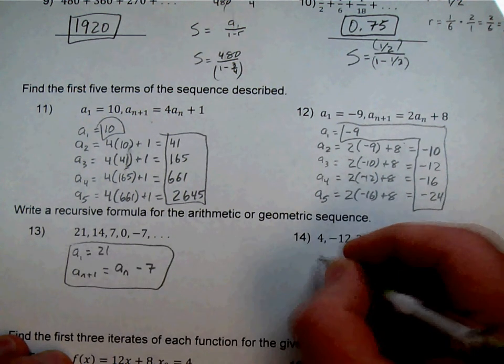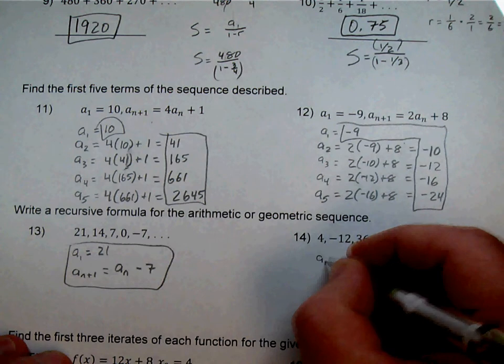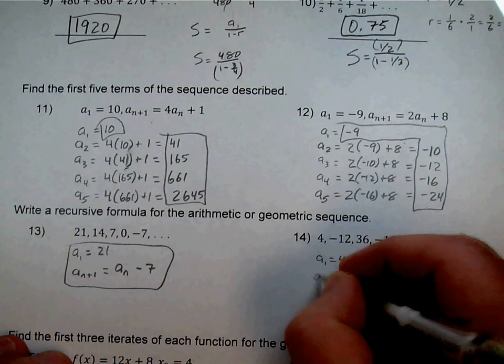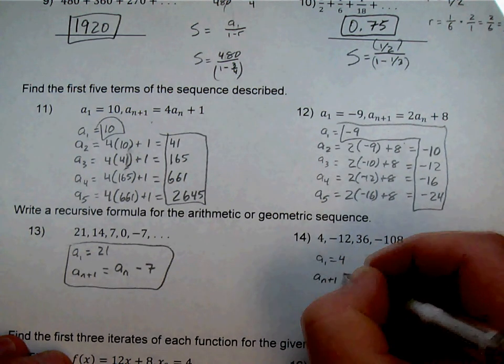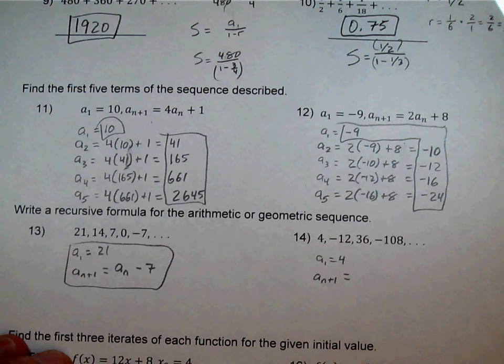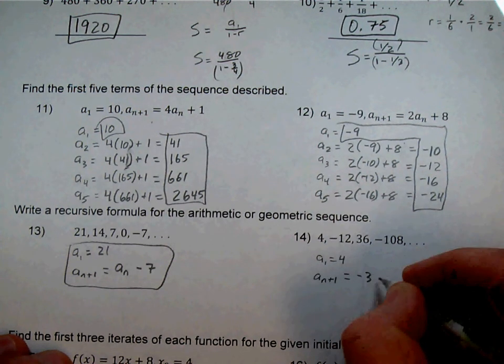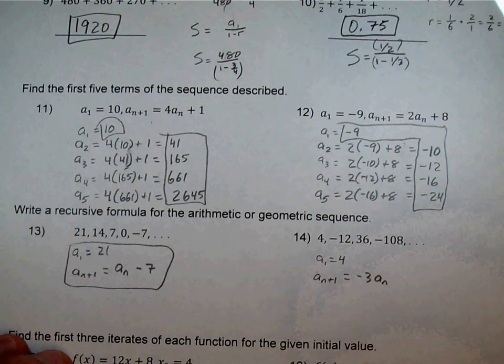Number 14: the first term is 4, so we indicate that. Then for the recursive rule, it looks like we're multiplying by negative 3. So A sub N+1 equals negative 3 times A sub N.